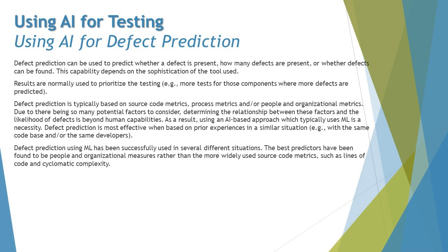There's a somewhat contradicting statement here: on one hand it says it's difficult for humans to determine where defects are likely to be present, yet on the other hand it says defect prediction depends on prior experience from similar situations. So one way or another, someone has to train the AI. Until we have the right set of metrics, the AI cannot make meaningful predictions on its own.